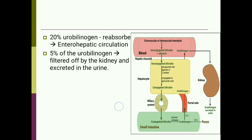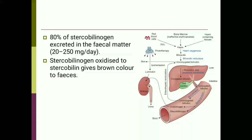Only 5 percent of urobilinogen is filtered by the kidneys and excreted in the urine. Eighty percent of the stercobilinogen present in the intestine, which is not absorbed, is excreted in fecal matter in amounts ranging from 20 to 250 milligrams per day. This stercobilinogen is oxidized to form stercobilin, which gives brown color to the feces.